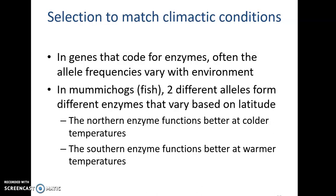A good example is the mummichog, which is a small fish that eats mosquitoes. There are two different alleles that form two different enzymes that vary based on latitude, north or south. These are enzymes that have to do with respiration. The northern enzyme functions better at northern temperatures, allowing fish to swim faster and survive better in colder temperatures than fish that have the southern allele, which functions better at warmer temperatures.